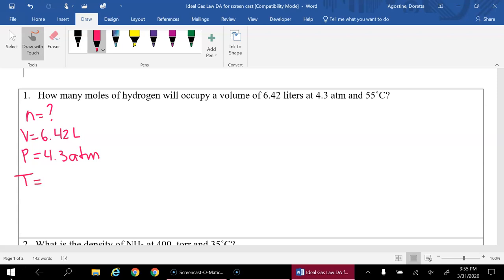So our temperature is going to be converted to Kelvin, so we're going to add 273 to that, and we'll get 328 Kelvin and our R.